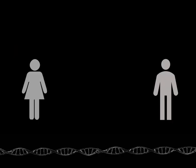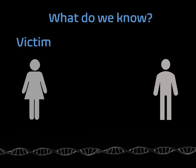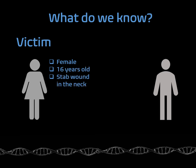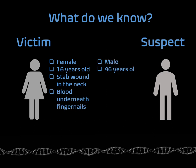So what do we know about our victim and suspect? The victim is a female, 16 years of age. Based on the autopsy report, she had a stab wound in the neck and blood underneath her fingernails. Our suspect is a male, believed to be 46 years of age, and believed to be the alleged father of the victim.